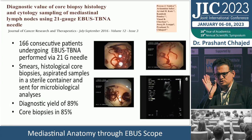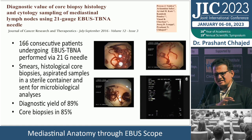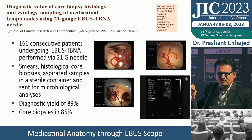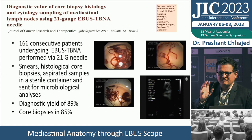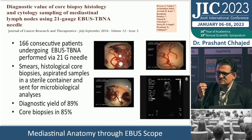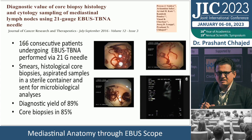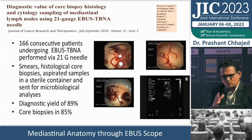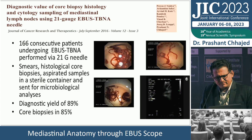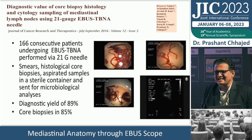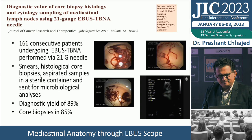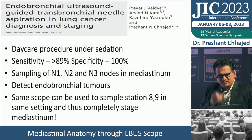Our Indian data published in 2016, done with Yasufuku: in 85% of patients we could obtain cores, with a diagnostic yield of 89%. The cores can be blood-admixed; we send the entire material to the pathologist and instruct them not to discard remaining material, which can be used for a cell block.